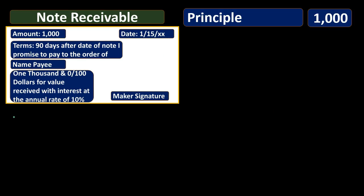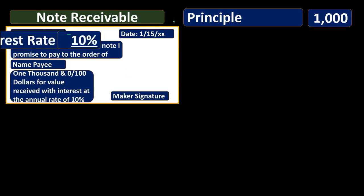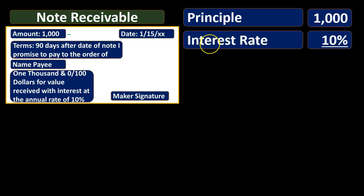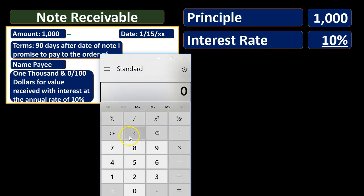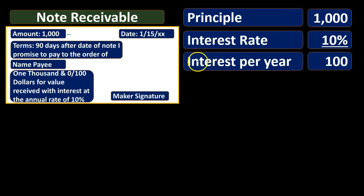When we calculate the interest, we need to figure out how much is going to be paid to us at the end of the time period. At the beginning there's only $1,000 due — no interest until time passes. After time passes they owe us interest because we rented them the money. So: $1,000 times 10% equals $100. Remember that interest is stated as an annual rate, so $100 would be for a full year. We divide by 360 days — using 12 months times 30 days to make an even calculation — giving us approximately $0.28 per day.